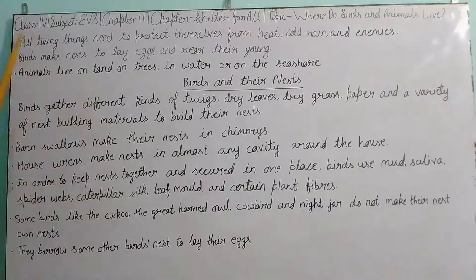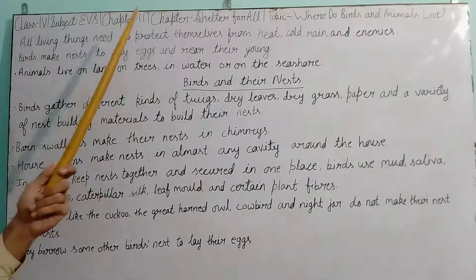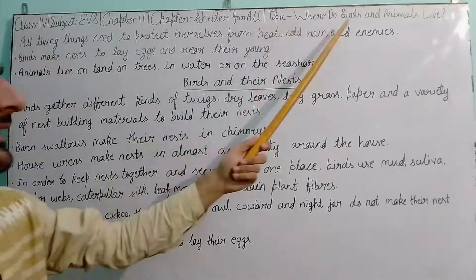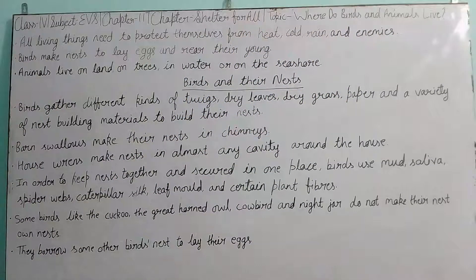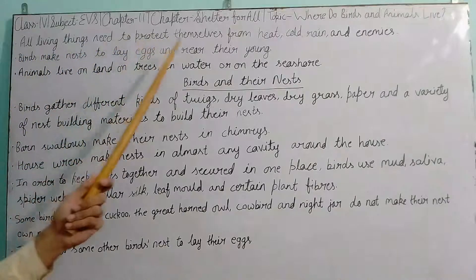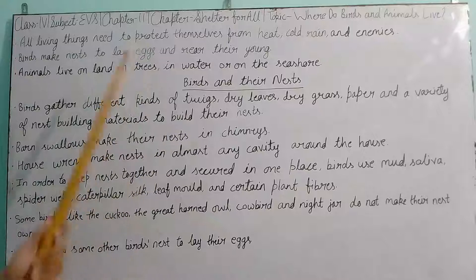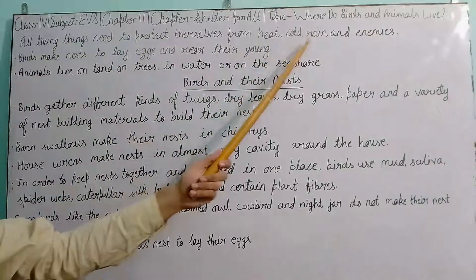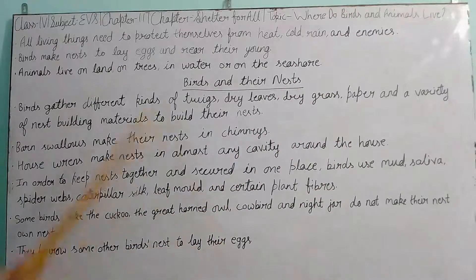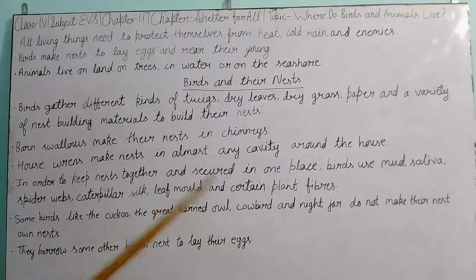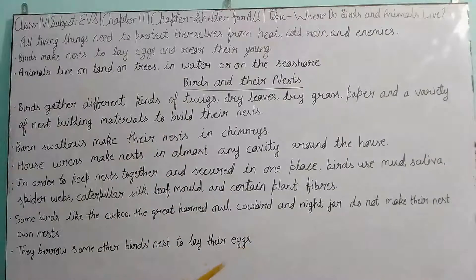Hello students, let's start Class 4 Subject Areas, Chapter 11 — chapter name: Shelter for All. Topic: where do birds and animals live? All of you know that everybody, including human beings, needs shelter. The same applies to other living things. All living things need to protect themselves from heat, cold, rain, and enemies. That is the main reason — protection from weather and other harmful living things.